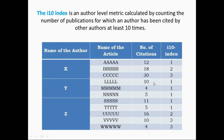For author Y, his first publication L has 10 citations — I-10 index is 1. His second paper M has only 4 citations, so there is no change — I-10 index remains 1. His third paper N has 5 citations, and again there is no change — the I-10 index is still 1. This is because only 1 of his publications has more than 10 citations.